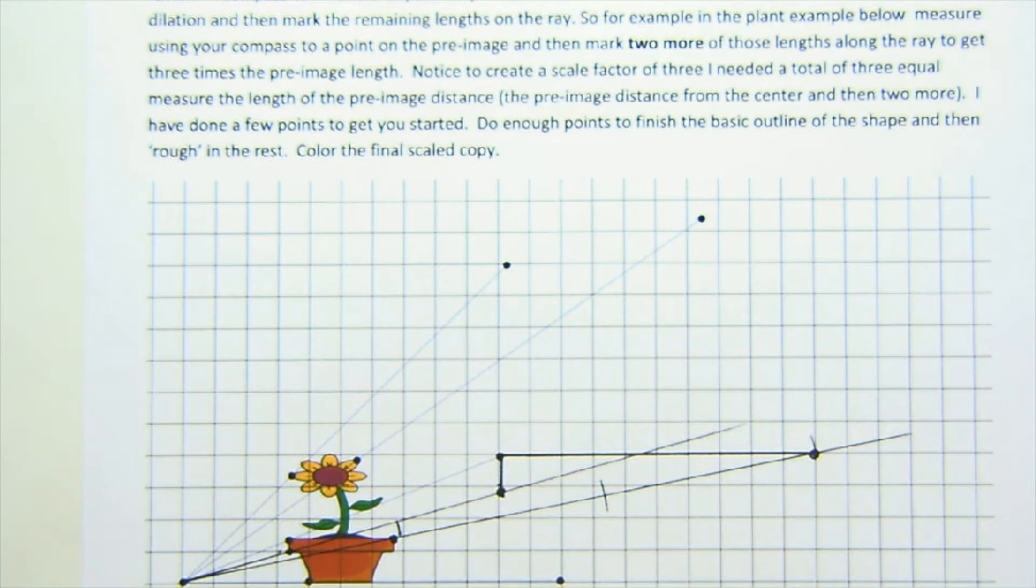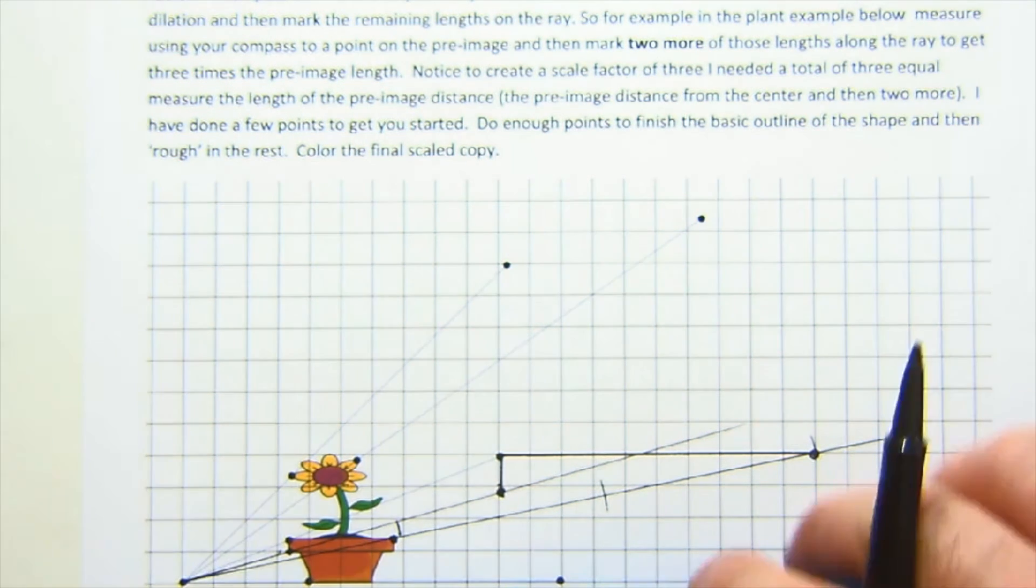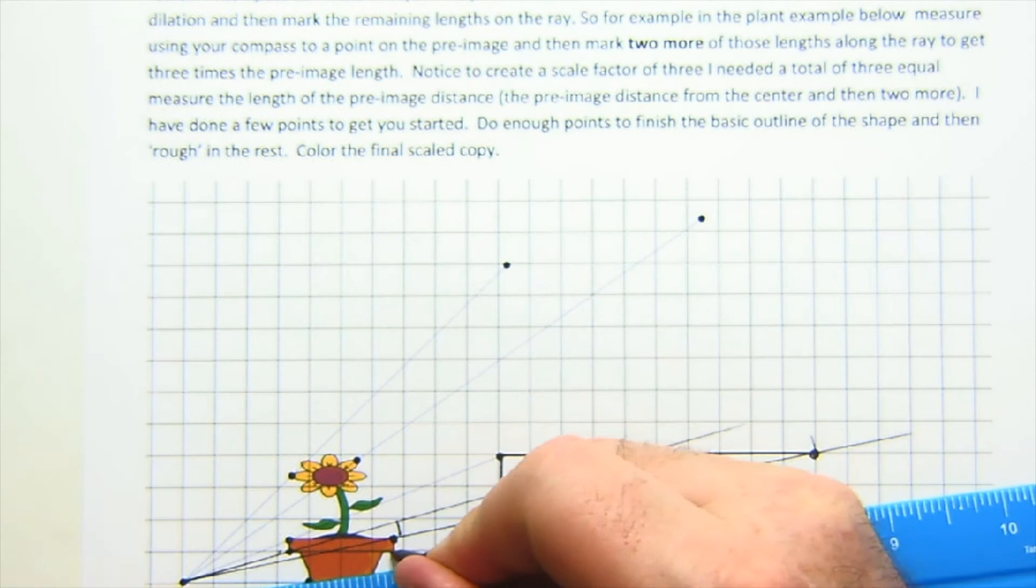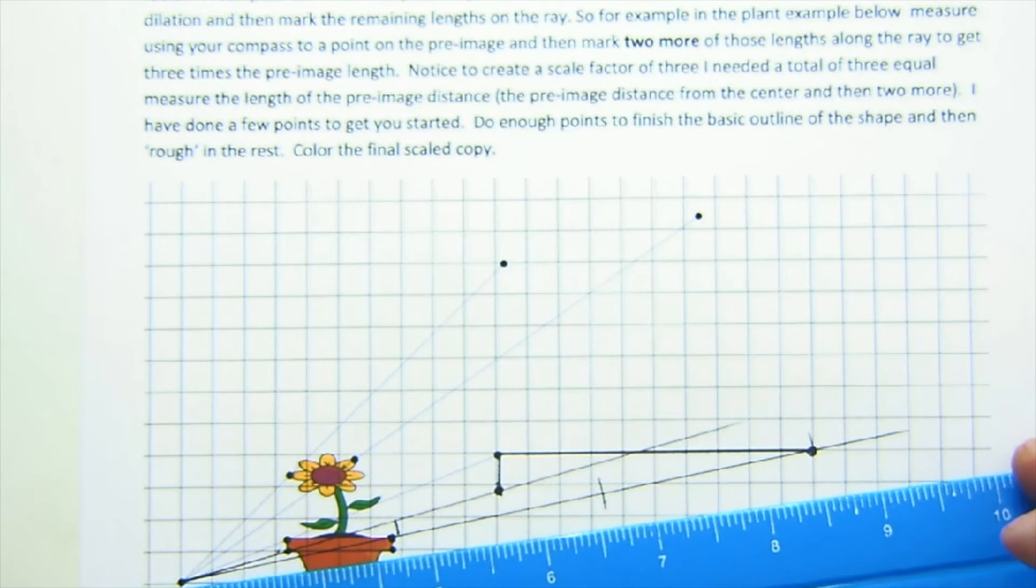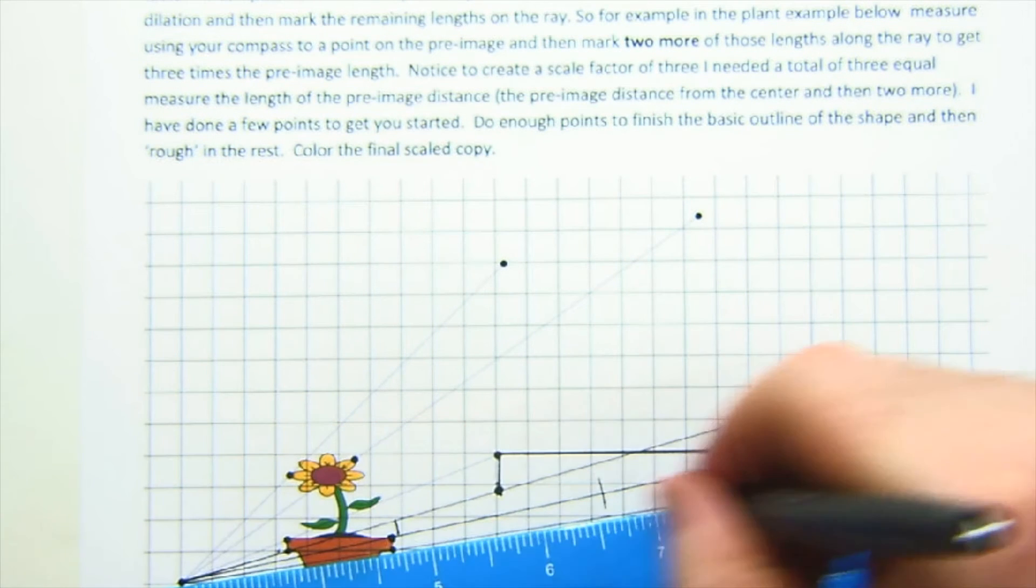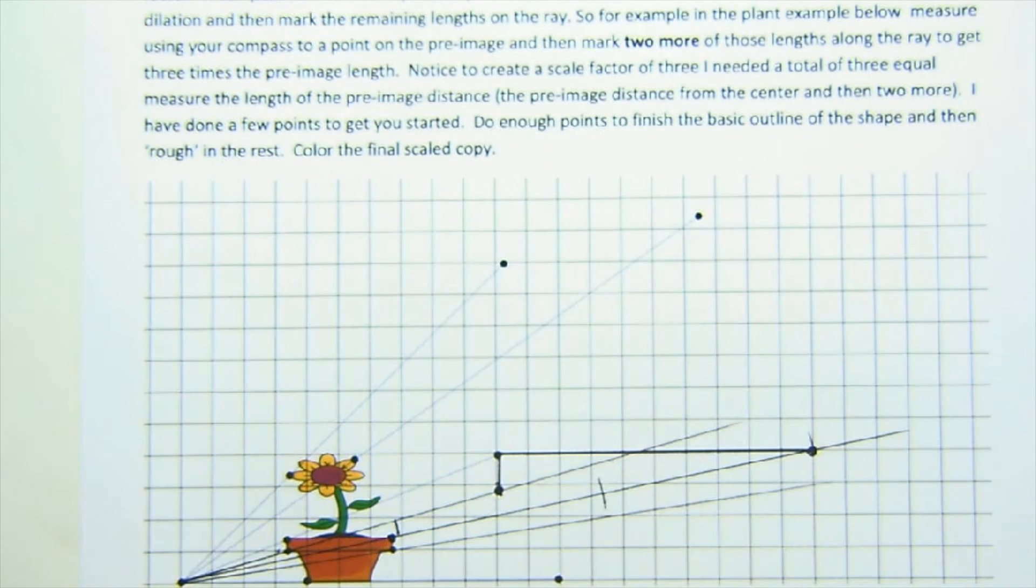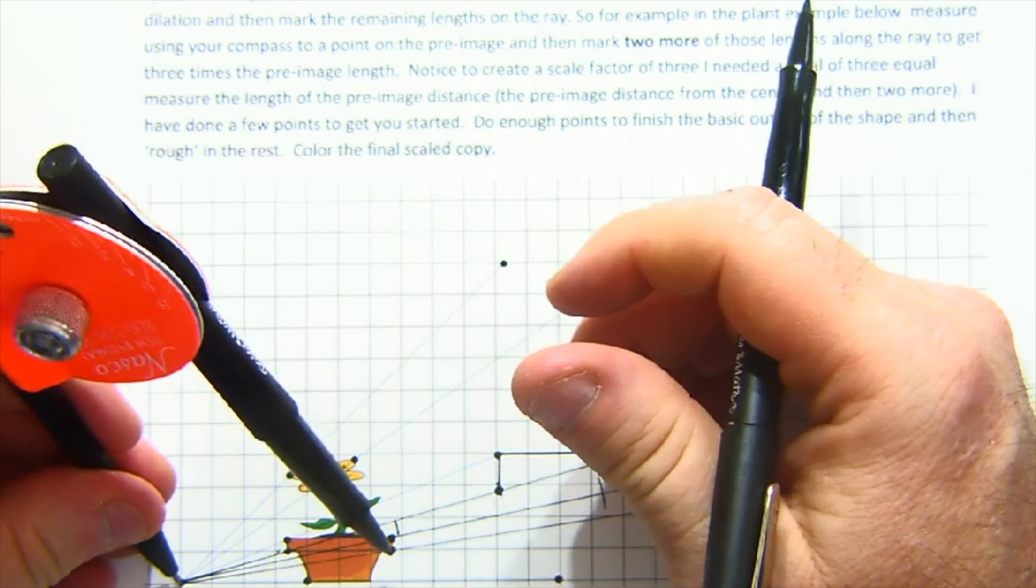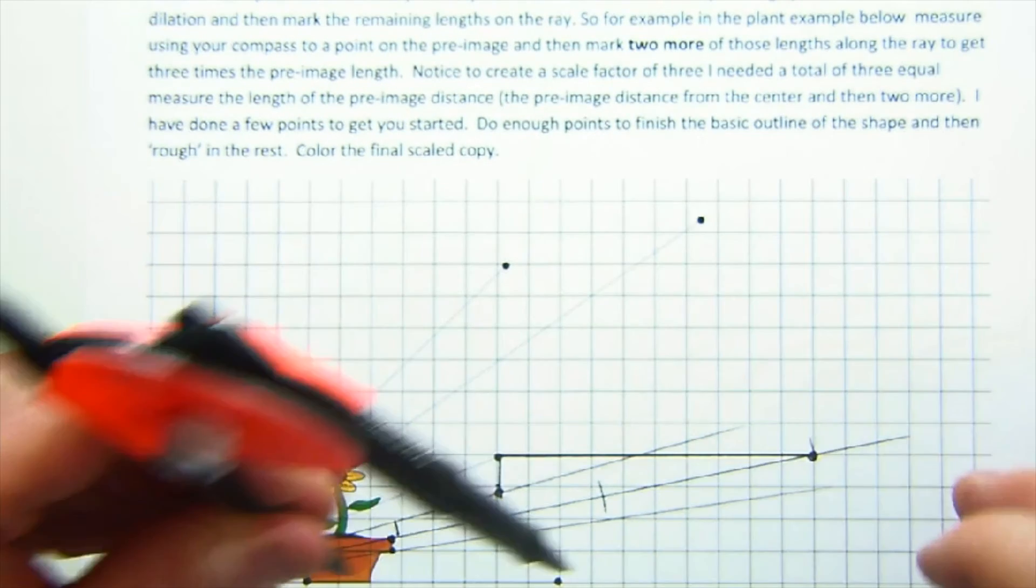Let me do one more just so I can get a little bit of the shape of my pot going. I'm going to do this edge here and find it. Off it goes, and I'm going to do three of those. Let's see, there's one.